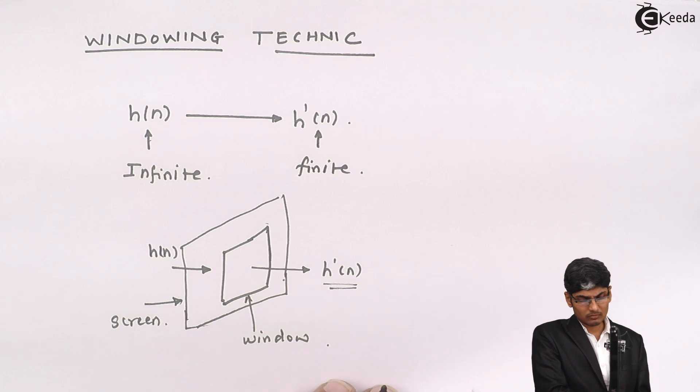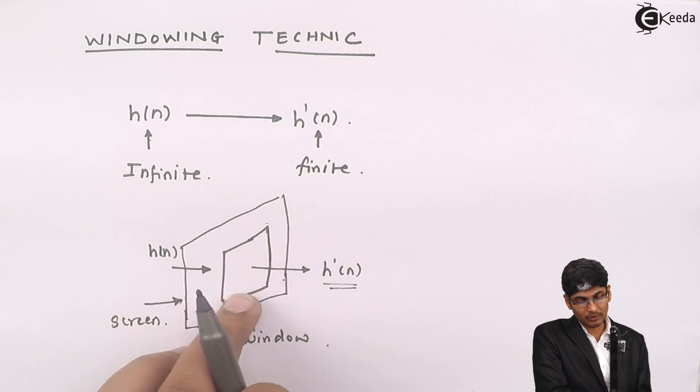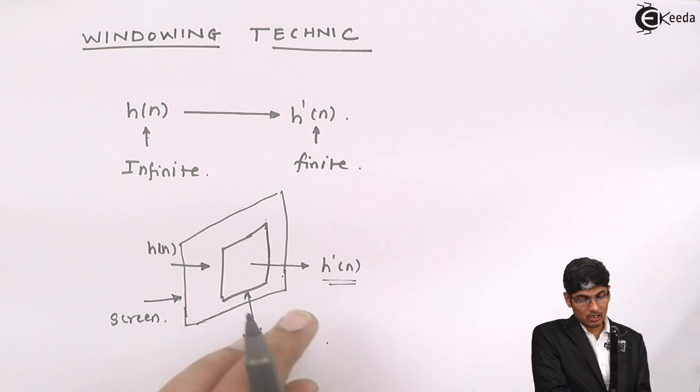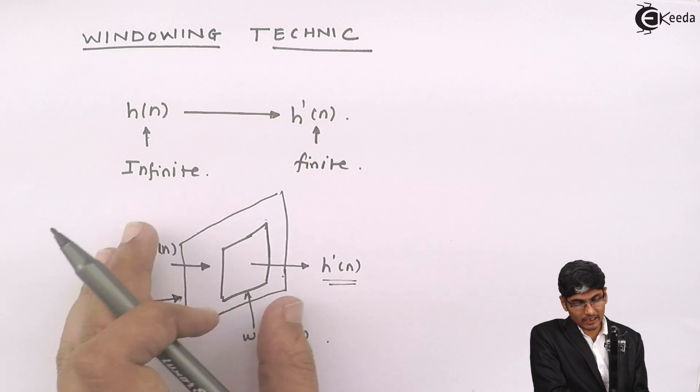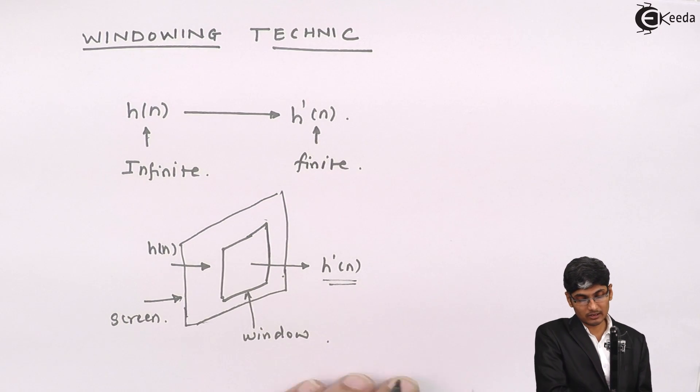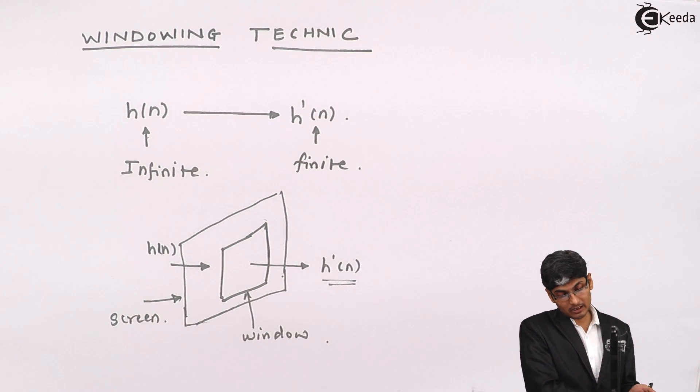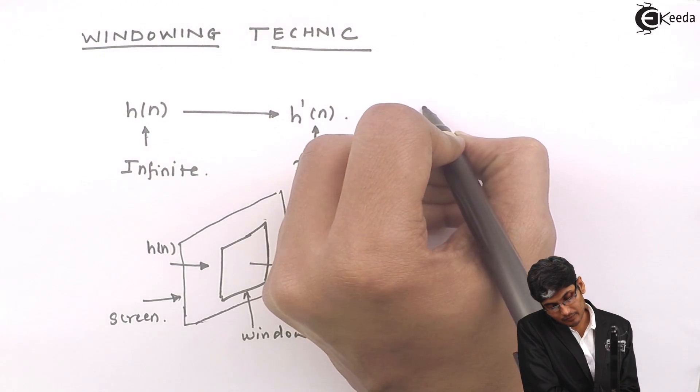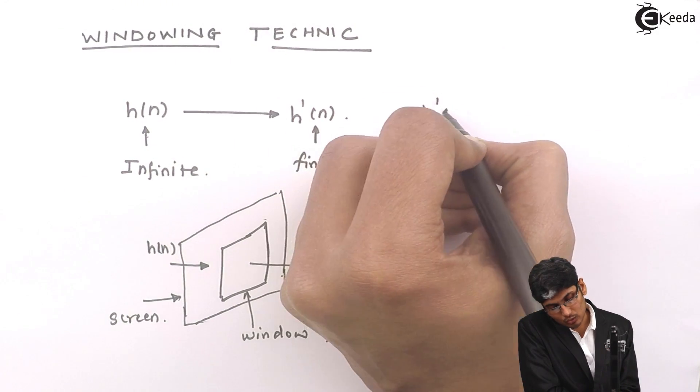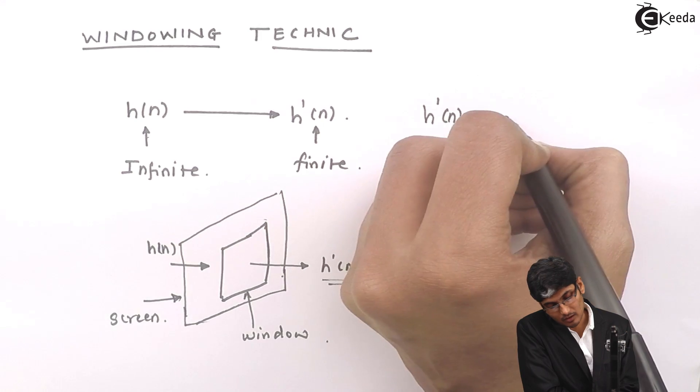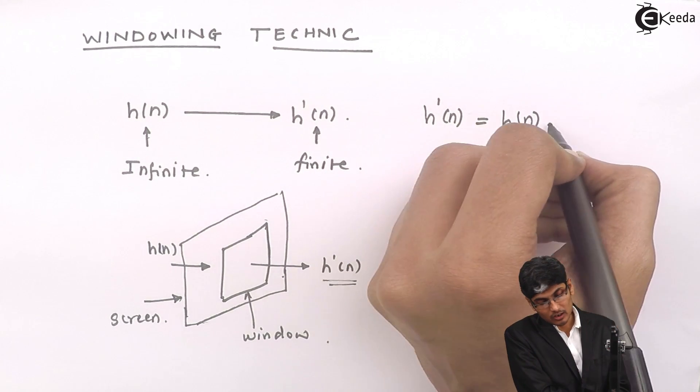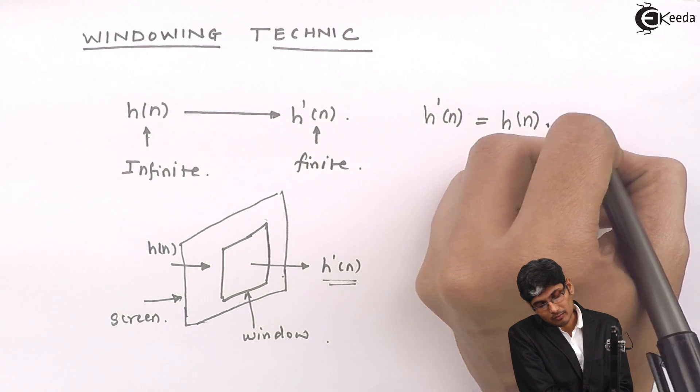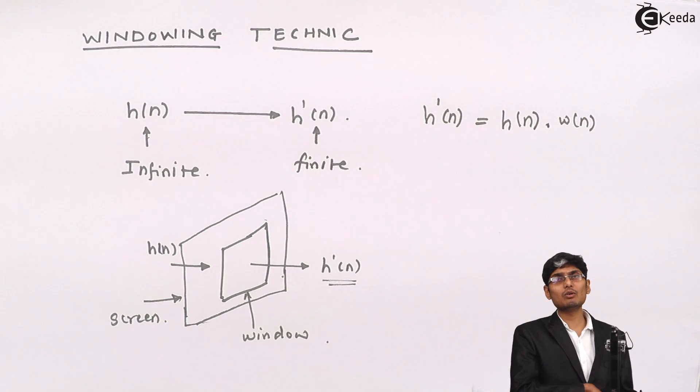How is this window formed? Basically this is the physical interpretation. How mathematically can I write this technique? Mathematically, what I do is, I have, I want h dash of n from h of n. We multiply h of n by w of n.